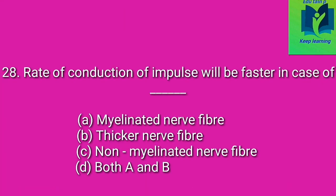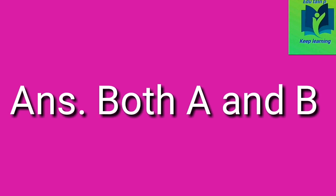Rate of conduction of impulse will be faster in case of dash. Option A: myelinated nerve fiber. Option B: thicker nerve fiber. Option C: non-myelinated nerve fiber. Option D: both A and B. Answer: both A and B.